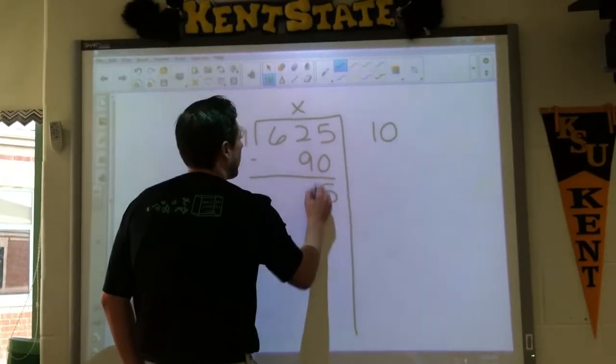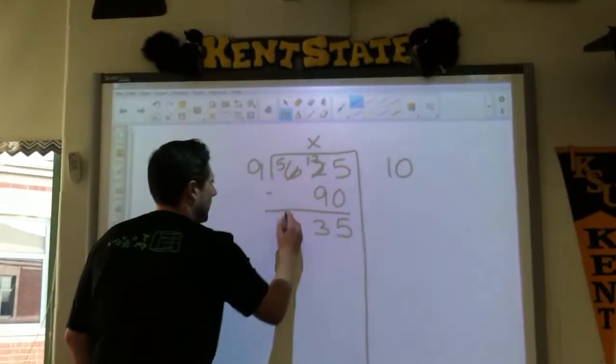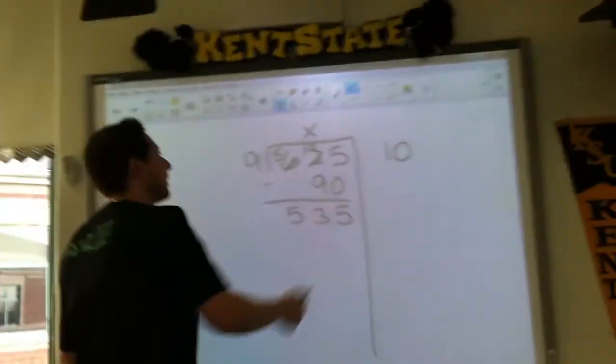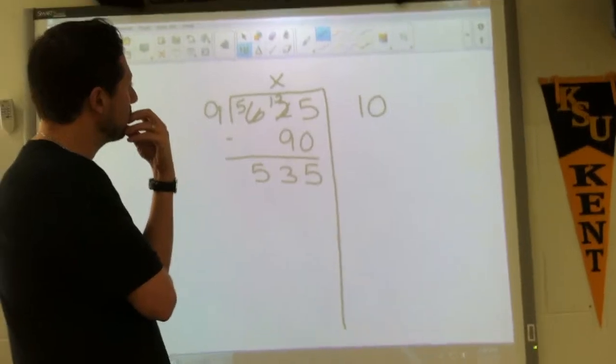So when I subtract, got to do a little regrouping here. 12 minus 9 is 3, 5 minus nothing would be 5. I'm looking at 535. Well, what if I did 9 times 50?